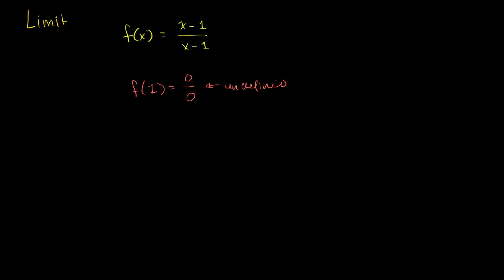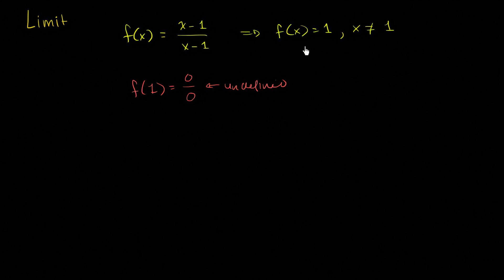So you can make the simplification — you can say that this is the same thing as f of x equals 1, but you would have to add the constraint that x cannot be equal to 1. Now this and this are equivalent. Both are going to be equal to 1 for all other x's other than 1, but at x equals 1, it becomes undefined.